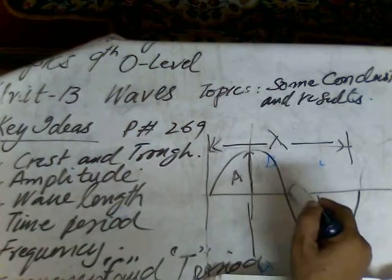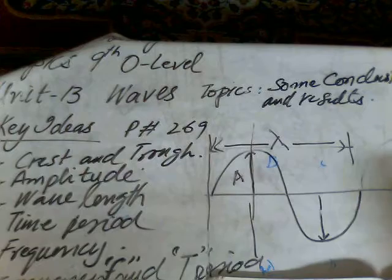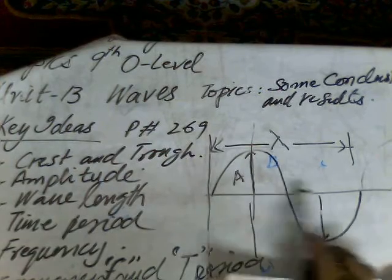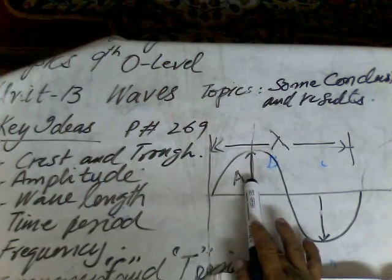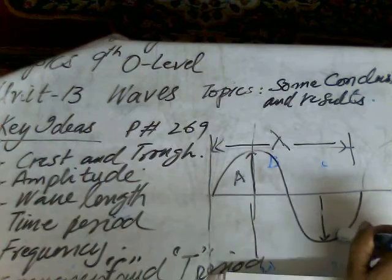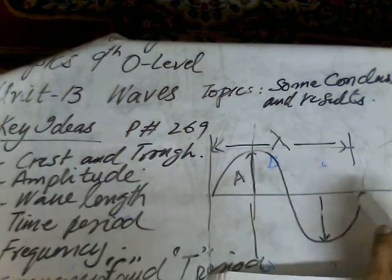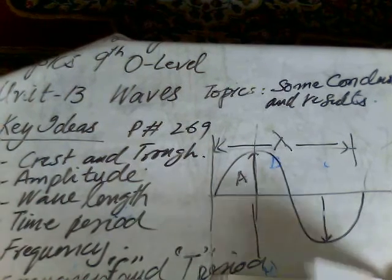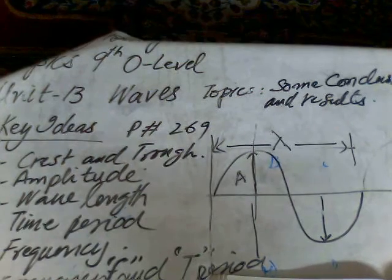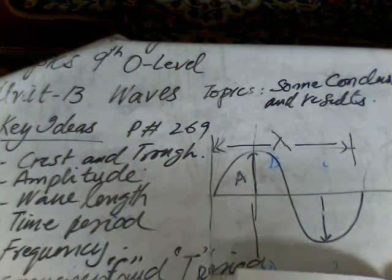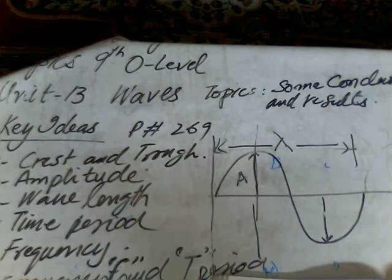This part, upper part of the main line, is called crest, and this below part, all those points below the line, the main line, are called trough. Crests are the highest points and the troughs are the lowest points of a transverse wave.